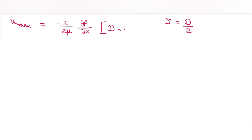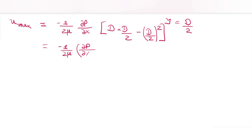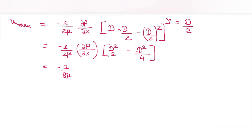U_max = −(1/2μ)(∂P/∂x)[D·(D/2) − (D/2)²] = −(1/2μ)(∂P/∂x)[D²/2 − D²/4]. Since D²/2 − D²/4 = D²/4, we get U_max = −(1/8μ)(∂P/∂x)·D².